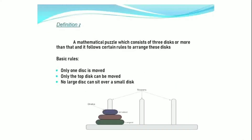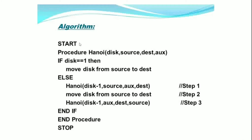Let us get into the algorithm. Start. Procedure Annoy(disk, source, destination, aux). If disk == 1, then move disk from source to destination. Else, 3 steps have to be followed. Step 1: Annoy(disk minus 1, source, aux, destination). Step 2: Move disk from source to destination. Step 3: Annoy(disk minus 1, aux, destination, source). End if. End procedure. Stop.